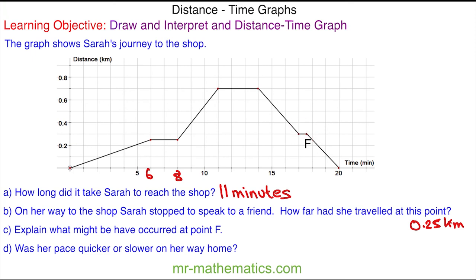Finally, for question D, was her pace quicker or slower on her way home? Well, it took 11 minutes to get to the shop and it took six minutes to get back from the shop, so the pace was quicker on her way home.